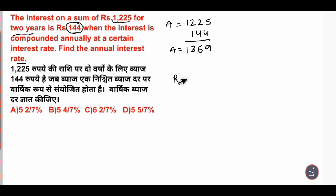To find the rate, we will do root. We will put the principal, which is 1225. The principal amount is 1369.